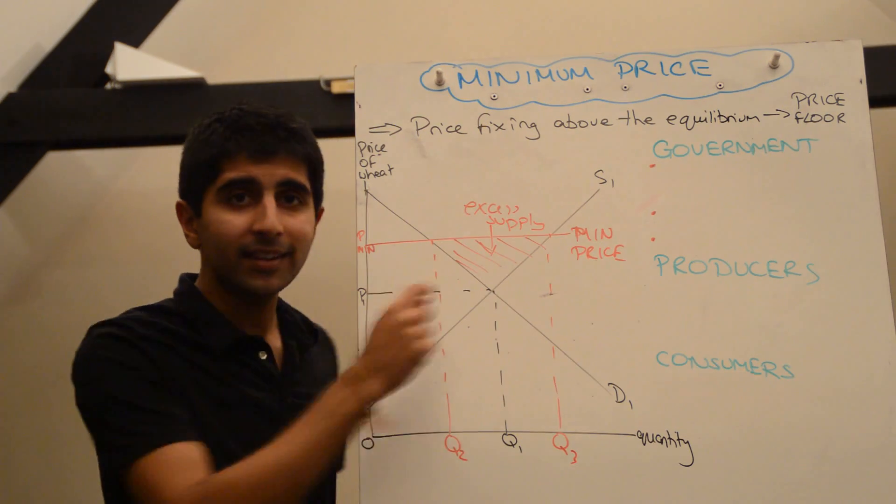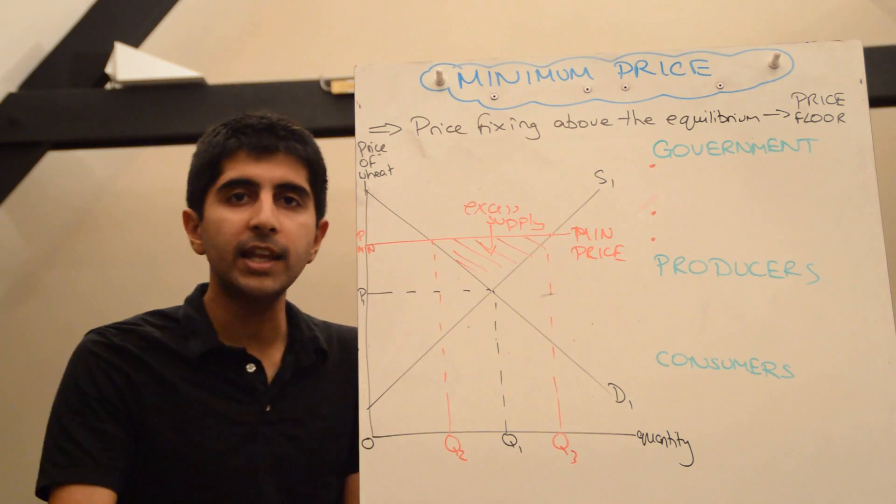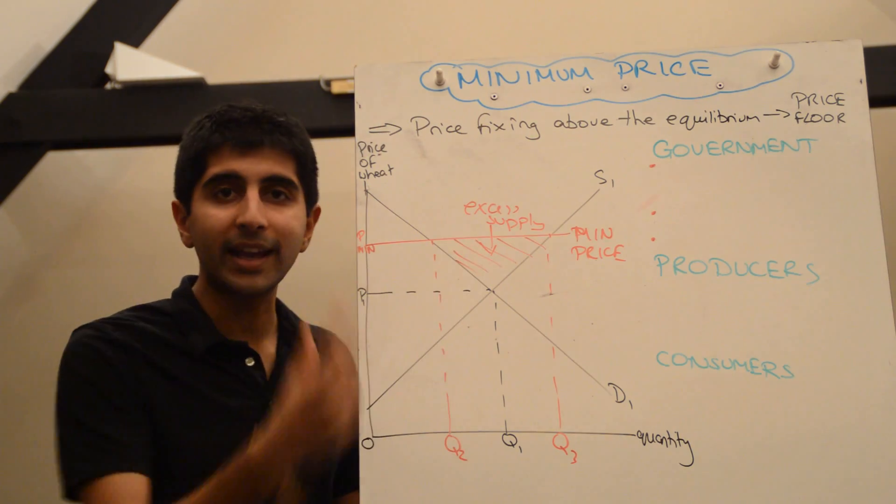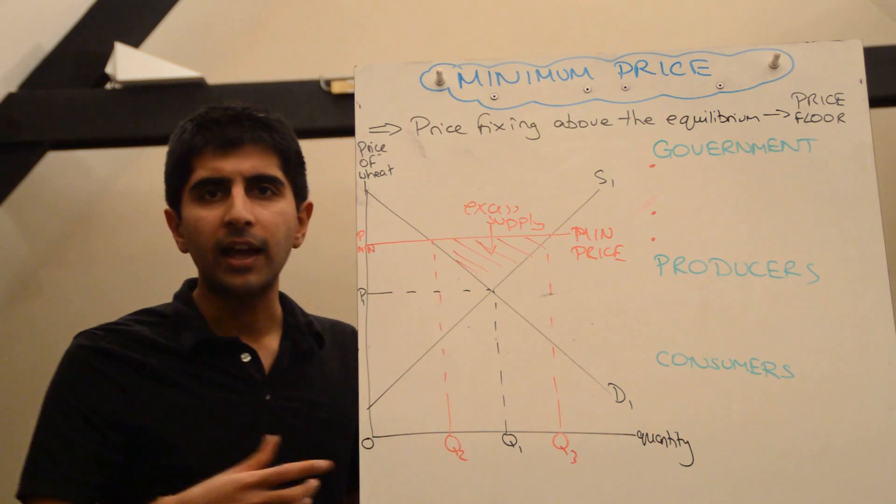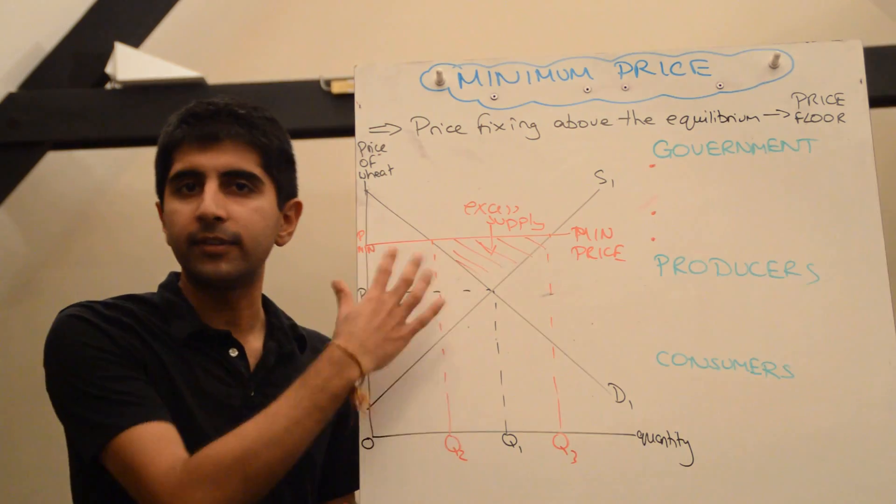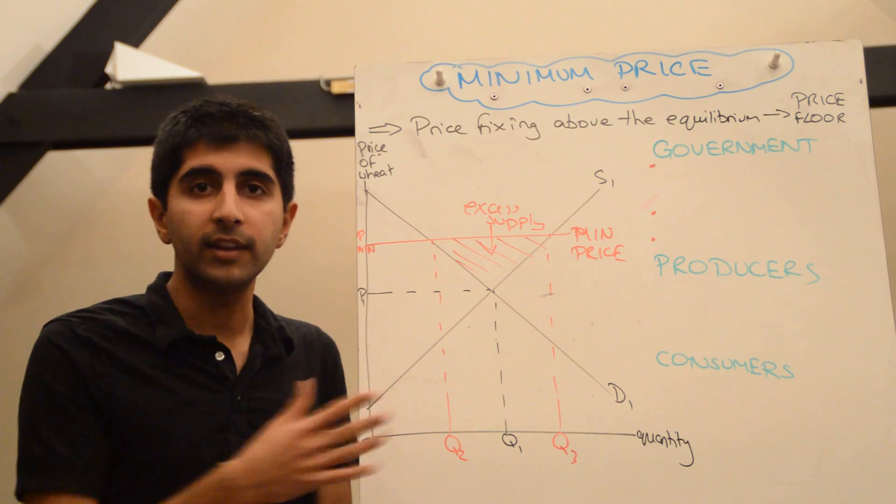Well, straight away, this excess supply is a problem that the government has caused. By the government intervening and setting a minimum price, this is a negative consequence, a problem. The government has to find a way of dealing with this. They can't just make producers deal with such an issue. They're not the ones who have set the minimum price. The government has.